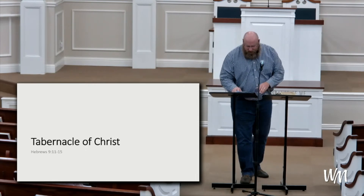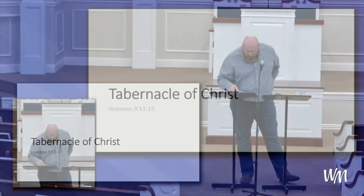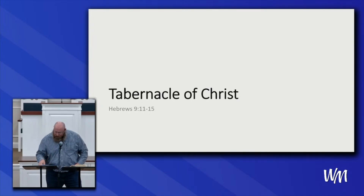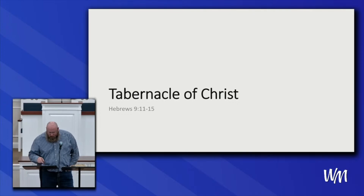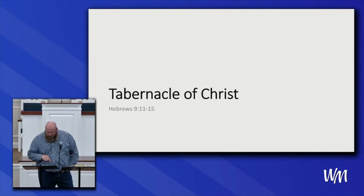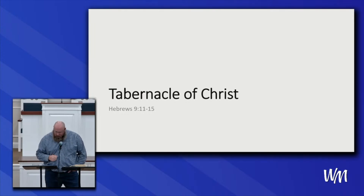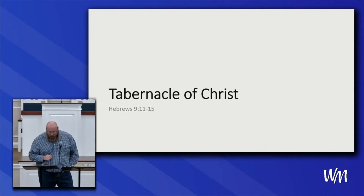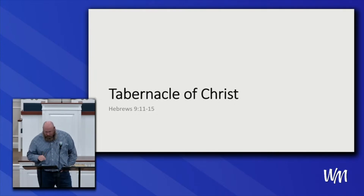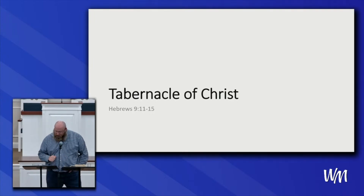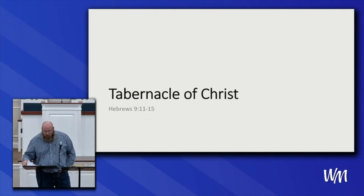Now let's look at verses 11 through 15. 'But Christ came as high priest of the good things to come with the greater and more perfect tabernacle not made with hands, that is not of this creation. Not with the blood of goats and calves, but with his own blood he entered the most holy place once for all, having obtained eternal redemption. For if the blood of bulls and goats and the ashes of a heifer sprinkled the unclean sanctifies for the purifying of the flesh, how much more shall the blood of Christ, who through the eternal Spirit offered himself without spot to God, cleanse your conscience from dead works to serve the living God. And for this reason he is the mediator of the new covenant by means of death, for the redemption of the transgressions under the old covenant, that those who are called may receive the promise of eternal inheritance.'